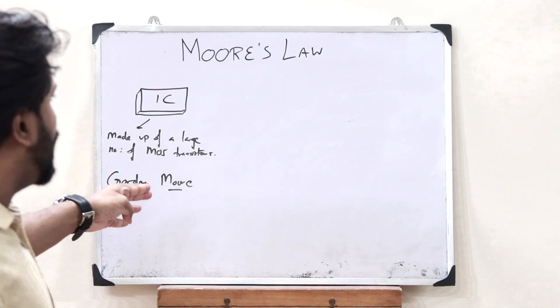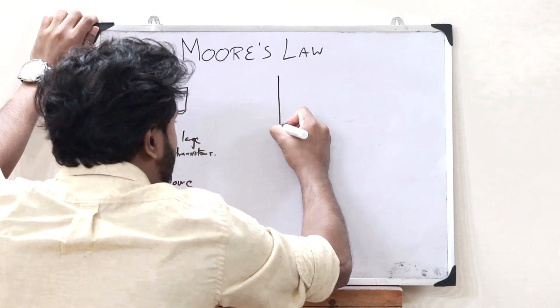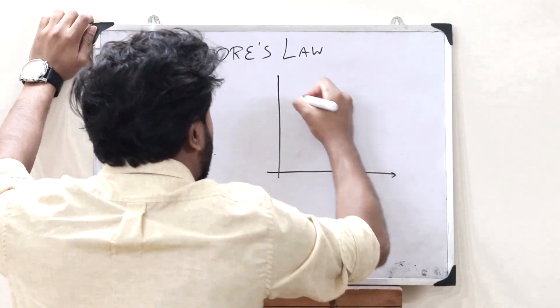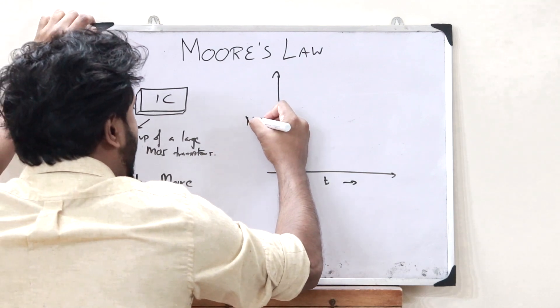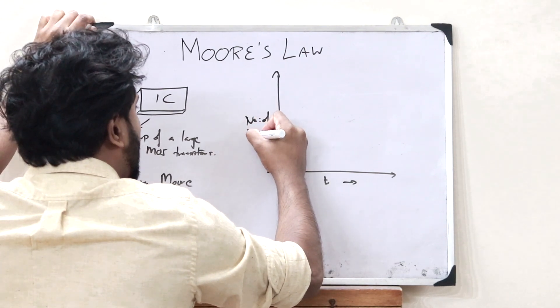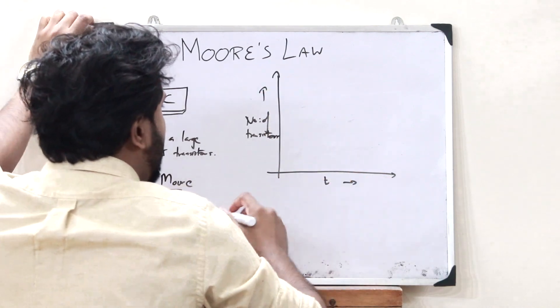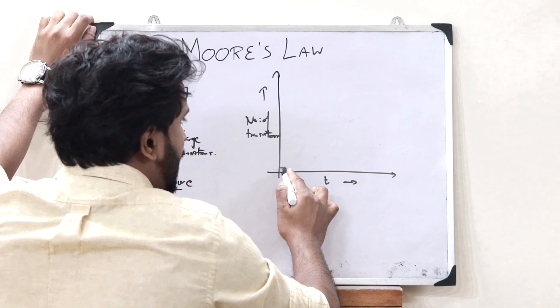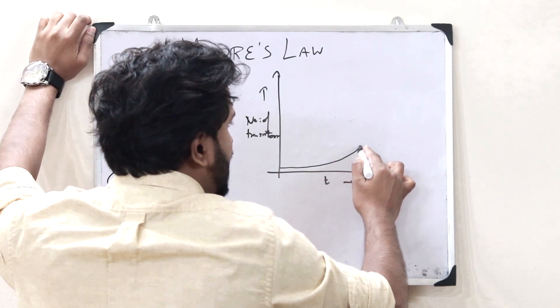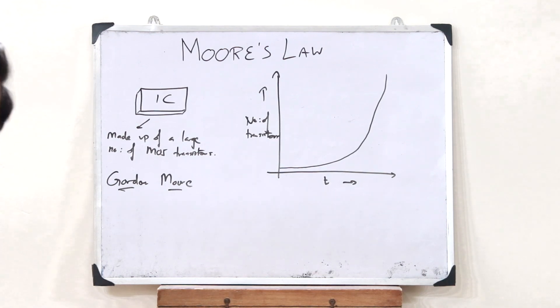According to Gordon Moore's Law, when we plot a graph like this with time along the x-axis and the number of transistors along the y-axis, what we observe is that according to the increase in time, there is an exponential increase in the number of transistors.